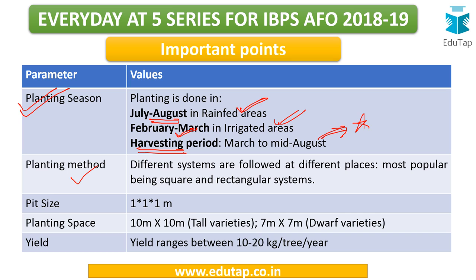Moving on to planting method: the most popular systems for mango are square and rectangular. Pit size is 1 x 1 x 1 meters. Planting spacing is 10 x 10 meters for tall varieties, and 7 x 7 meters for dwarf varieties. Yield ranges between 10 to 20 kg per tree per year.